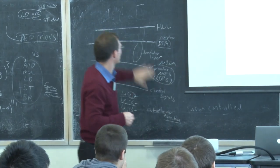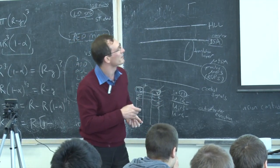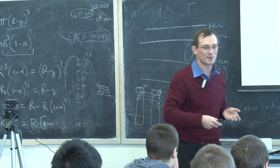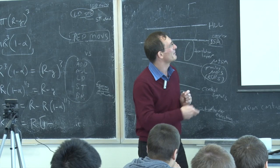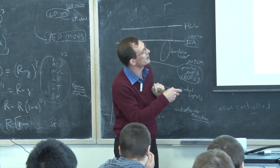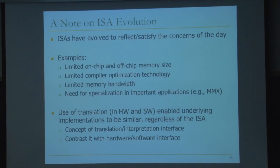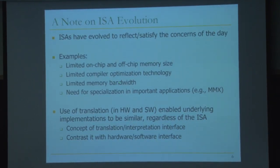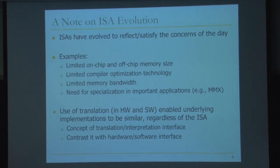ISAs have actually evolved. This is an evolution of computer architecture from the 60s, 70s, and 80s. ISAs have evolved to reflect and satisfy the concerns of the day, just like everything else. Why did we have CISC initially? It was not only because of compiler technology, but also on-chip and off-chip memory size was very limited. One of the big advances of CISC complex instructions is very high code density. Limited memory bandwidth was true early on, and is going to become even more true going forward as we put more cores on chip — and the pin count out of the chip is not scaling well.